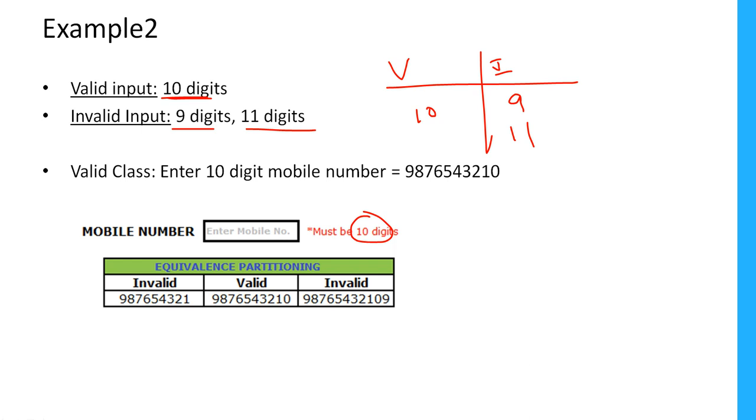What is the valid class here? Enter only 10 digit mobile number, that will be valid. The rest of them are invalid. We can make partitions like this and then prepare the test data. That's all about equivalence class partitioning techniques.